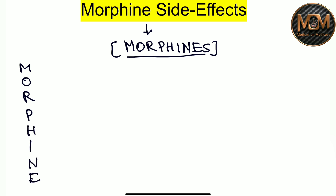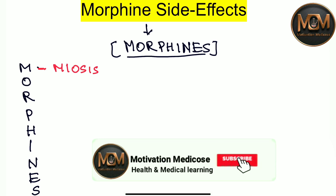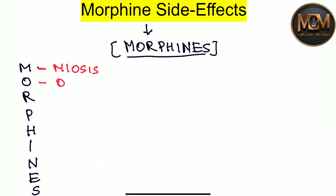From the M we have miosis. From the O we have orthostatic hypotension.